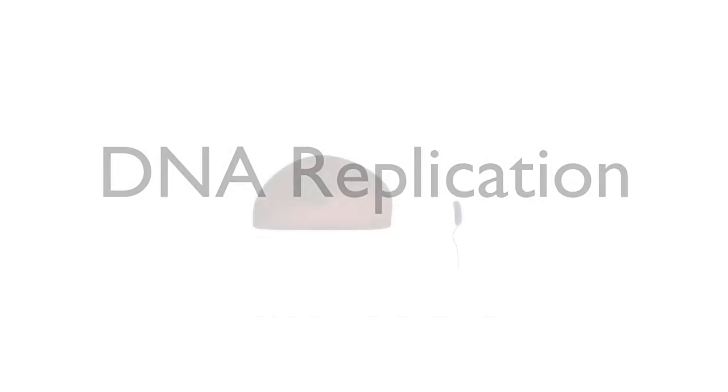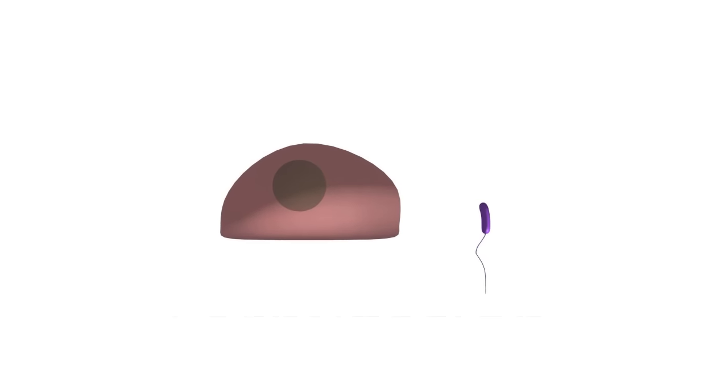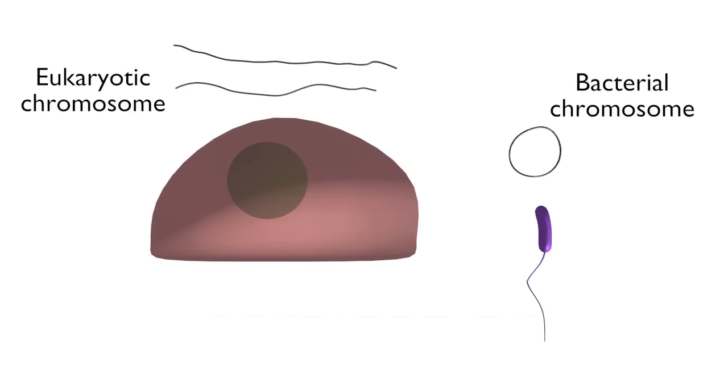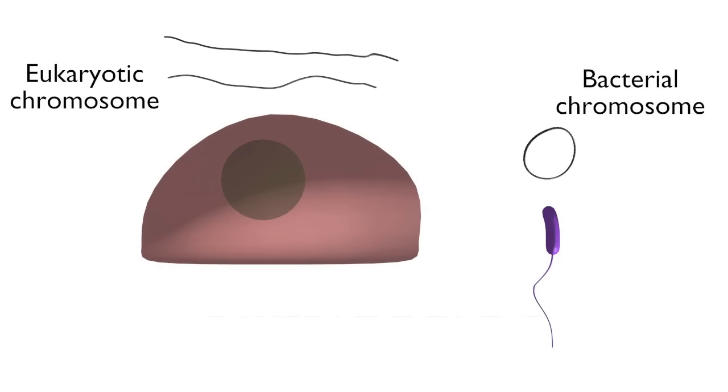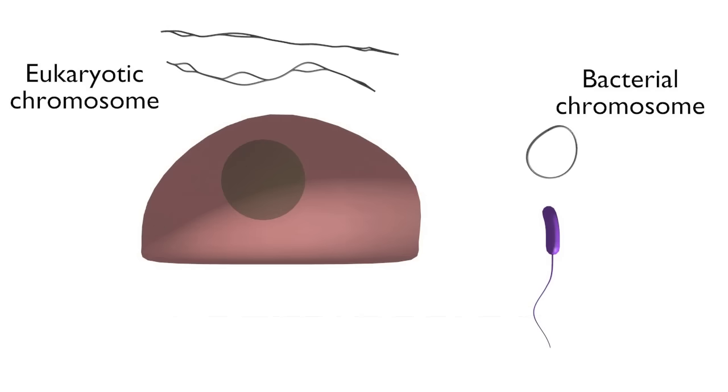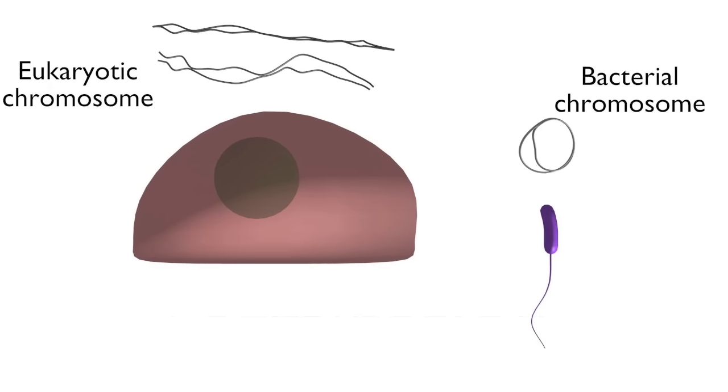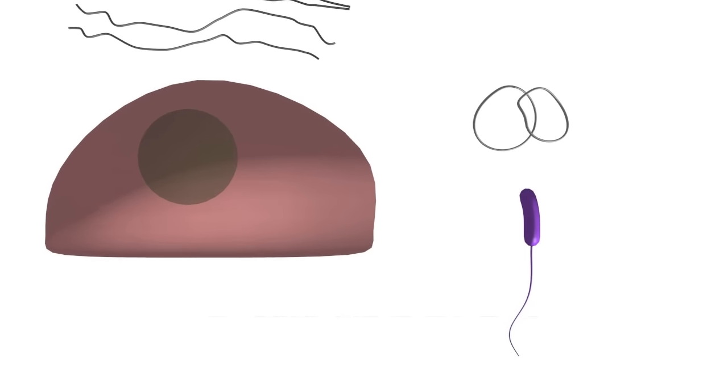DNA replication is the process by which a duplicate copy of the genetic material is made before a cell divides. The steps in replication are highly conserved in all organisms. There are a few details that differ between bacteria and eukaryotes, but we focus on bacterial replication in this animation for simplicity.